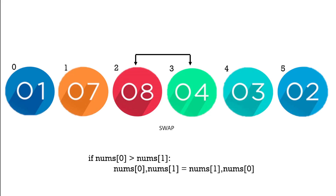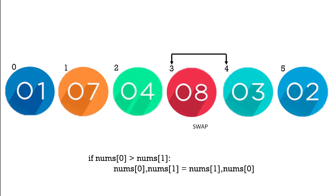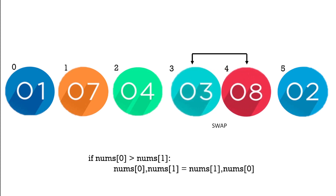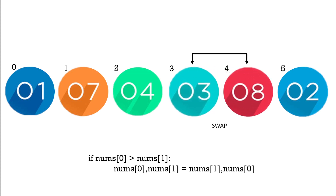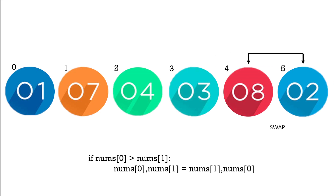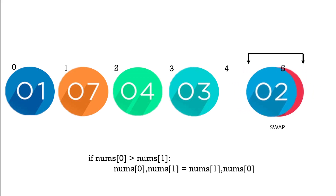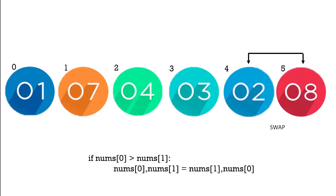The basic idea of a bubble sort is simple. It compares each element with the next element and swaps their position if they are in the wrong order. It's called a bubble sort because the smaller elements bubble to the top of the list as the larger elements sink to the bottom.